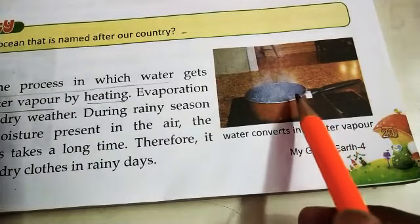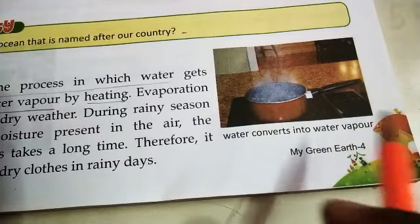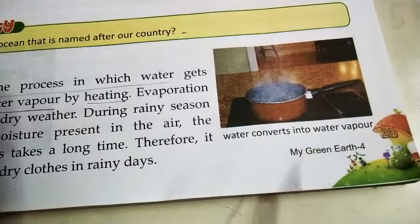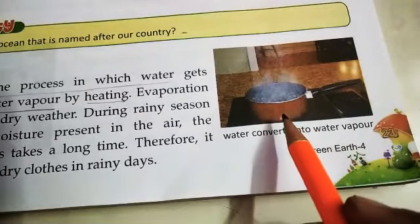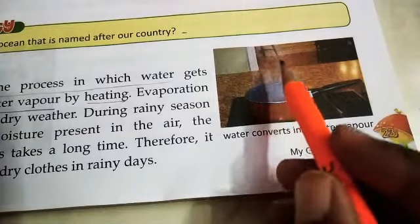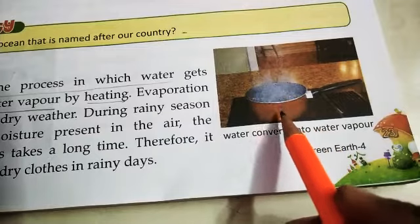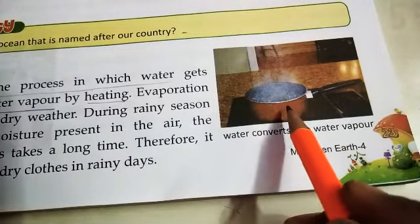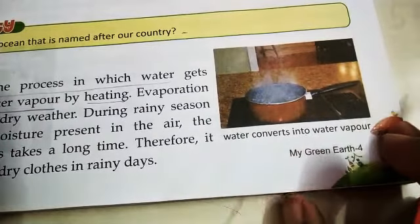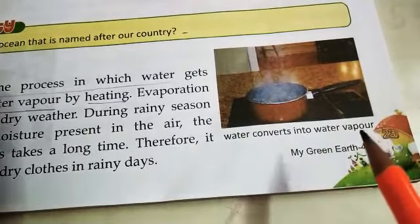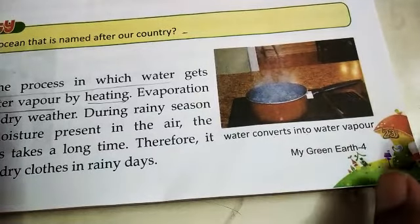Here we have water in a pan. When the water is heated continuously, this water boils and starts to become vapor. What happens after the water becomes vapor? You can also see this process of evaporation when your mother boils water.